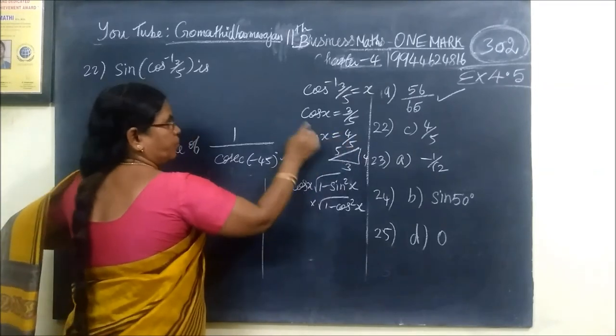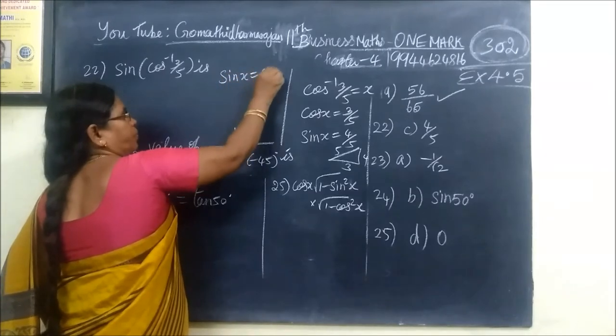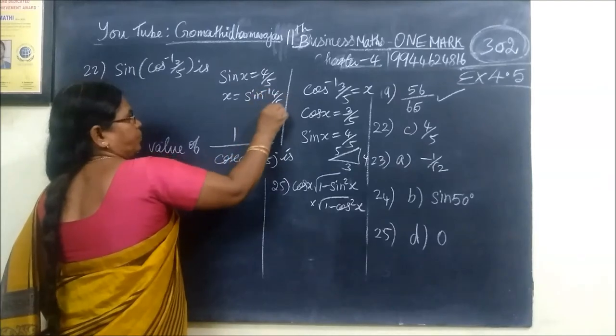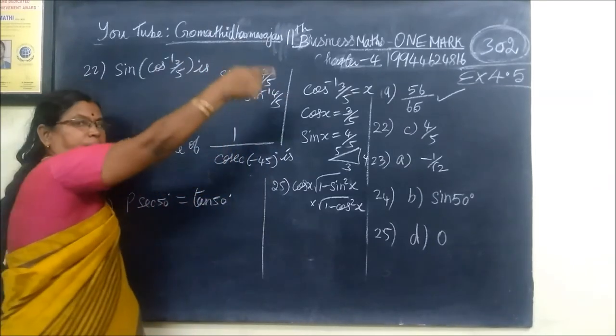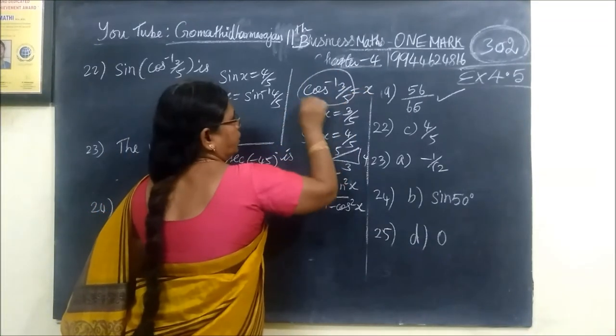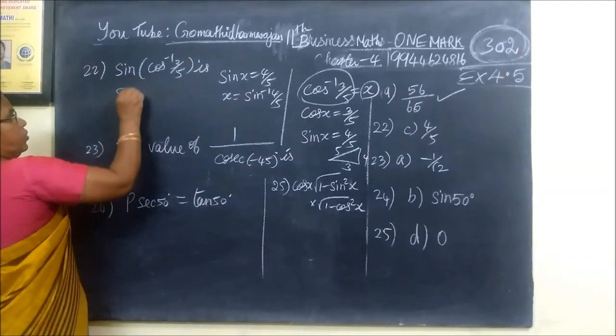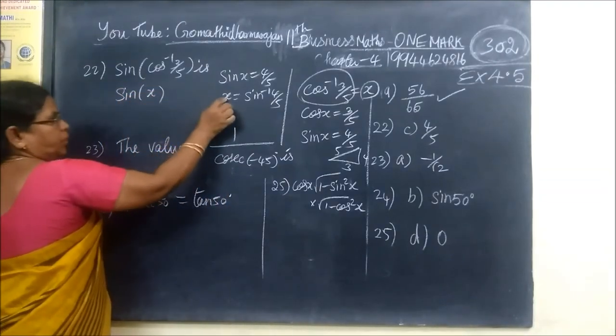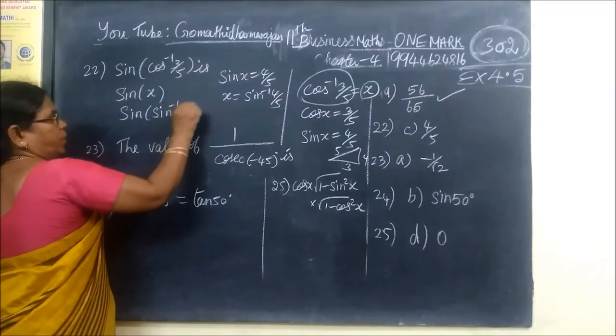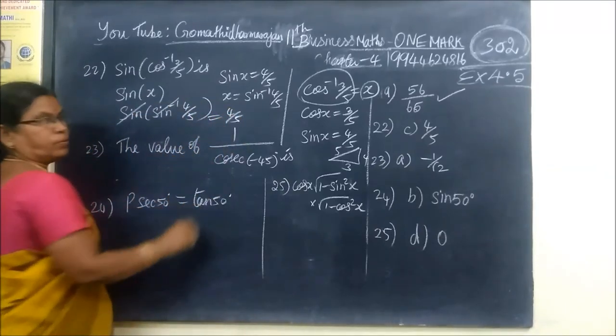Sin x equal to 4 by 5. X equal to sin inverse 4 by 5. Sin inverse, sin inverse 4 by 5. This will be cancelled, 4 by 5.